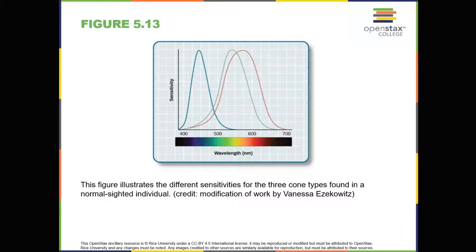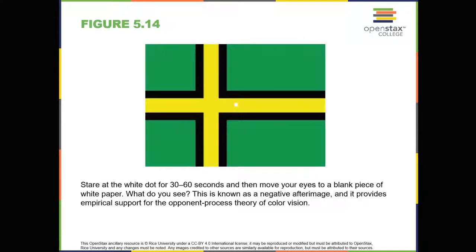According to the trichromatic theory of color vision, shown in Figure 5.13, all colors in the spectrum can be produced by combining red, green, and blue. The three types of cones are each receptive to one of these colors. Another major theory of color vision is known as the opponent process theory. According to this theory, color is coded in opponent pairs: black-white, yellow-blue, and green-red. The basic idea is that some cells of the visual system are excited by one of the opponent colors and inhibited by the other.